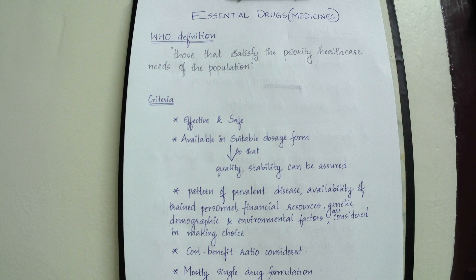To summarize, essential drugs are absolutely necessary or extremely important because they satisfy the priority health care needs of the population. They should be effective and safe, available in a suitable dosage form, and factors like pattern of prevalent disease, availability of trained personnel, financial resources, genetic, demographic, and environmental factors are considered. Cost-benefit ratio is also considered, and mostly single drug formulations get into the essential drug list. This essential drug list preparation is a continuous process because with the passage of time, the health care needs of the population change, so the essential drug list is adjusted accordingly.